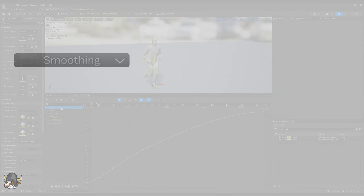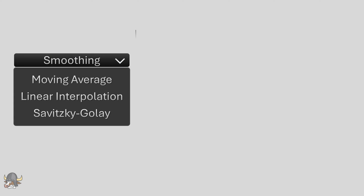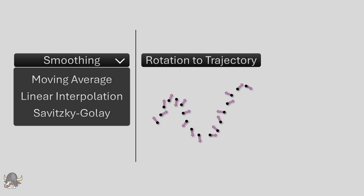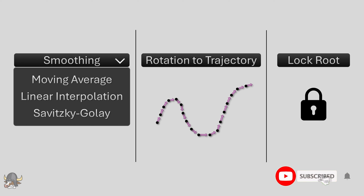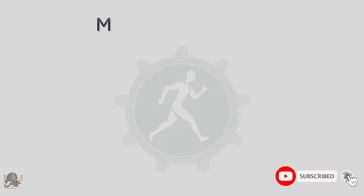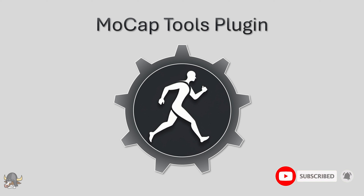Much more can be done with my plugin, such as root motion smoothing, constraining the rotation to the trajectory direction for forward-facing animations, locking the root in place for a prescribed interval, constraining IK bones, and more. Thanks for watching, and I hope you will consider adding the MCT plugin to your Unreal Engine toolset.